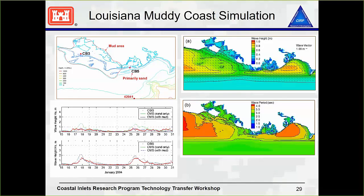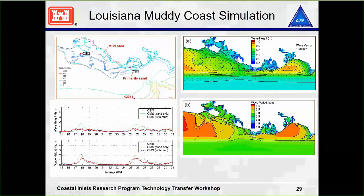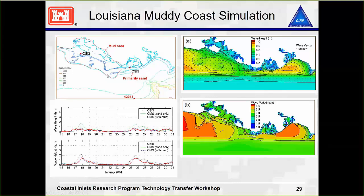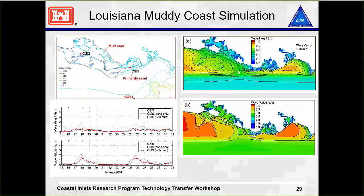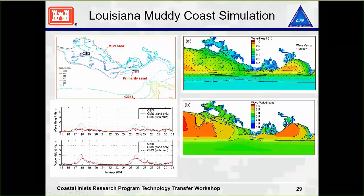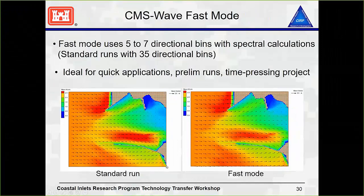The muddy coast and the different dissipation we get with mud compared to sand only — we identify in the wave grid a certain area as a mud area and give it a coefficient associated with that, while the rest of the grid has the default coefficient for dissipation. As we run the case, you can see what the wave height and period look like over these different areas, and then the comparison with measurements.